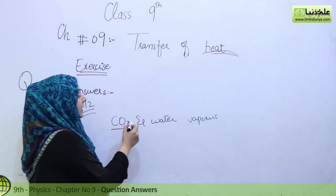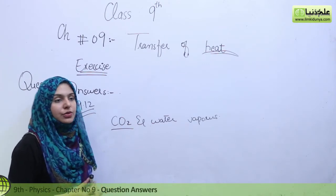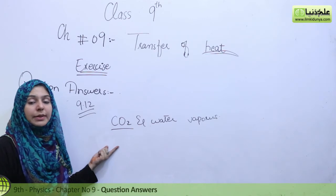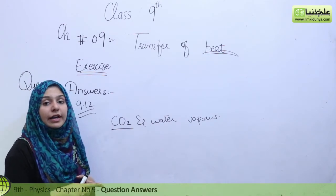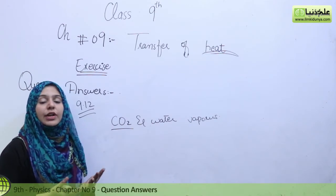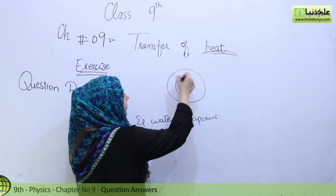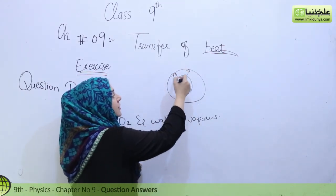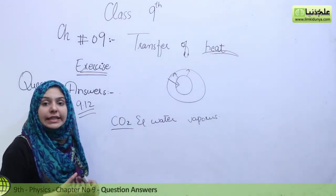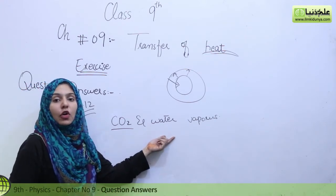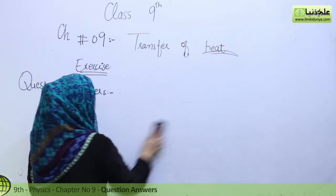In our atmosphere, the greenhouse effect is caused by carbon dioxide and water vapors. As we use more vehicles, petrol, fuel, and burning processes, carbon dioxide consumption and release increases. The carbon dioxide causes infrared radiation emitted from the Earth to be trapped — it cannot go outside. Instead, it goes back to the Earth, and the temperature of the Earth automatically increases. So carbon dioxide and water vapors cause the greenhouse effect, which ultimately causes global warming.